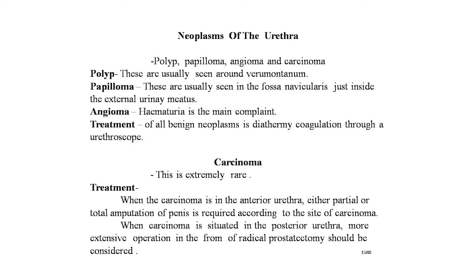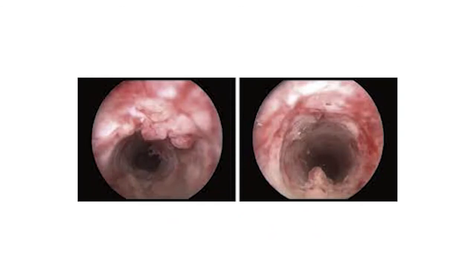Treatment: when the carcinoma is in the anterior urethra, either partial or total amputation of the penis is required according to the site of the carcinoma. When carcinoma is situated in the posterior urethra, a more extensive operation in the form of radical prostatectomy should be considered.